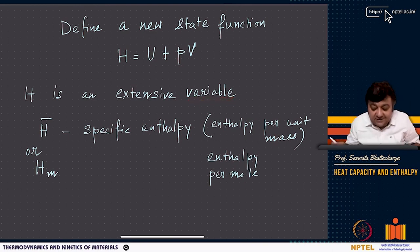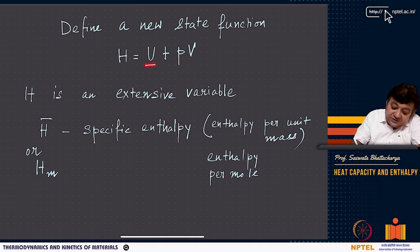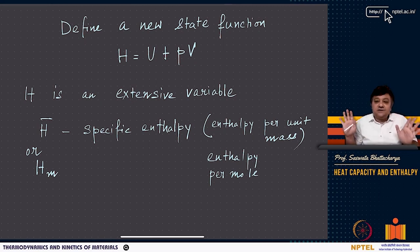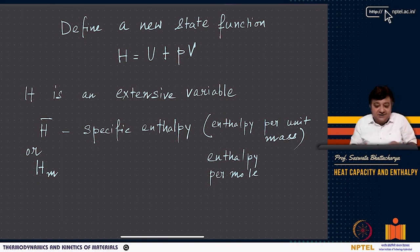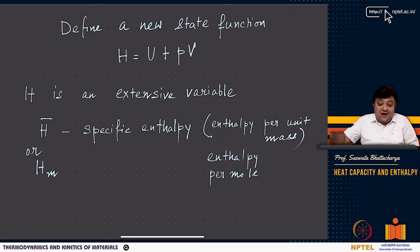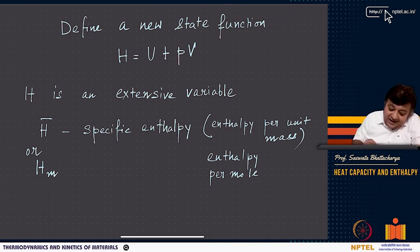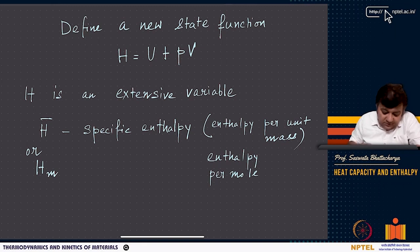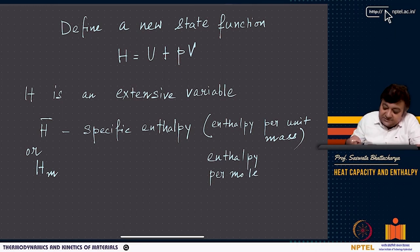H-bar is specific enthalpy — enthalpy per unit mass or per unit mole — denoted h-bar or h_m. Differentiating h = u + pv gives dh = du + p dv + v dp. This only equals du + p dv when dp = 0, meaning constant pressure. So dh = delta q_p: the heat input at constant pressure.